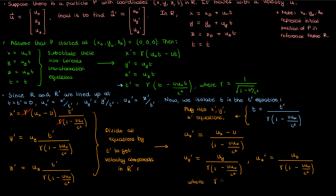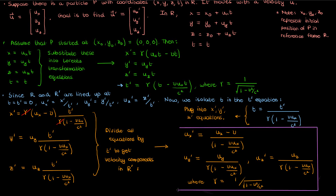Note that gamma is calculated in terms of the relative velocity of the reference frame — gamma is 1 over the square root of 1 minus v squared over c squared. It has the v, not the u. The v is the velocity of r' relative to r. These three equations represent the Lorentz transformation of velocity components — essentially the transformation of velocity components when you have a particle and go from one inertial reference frame to another.